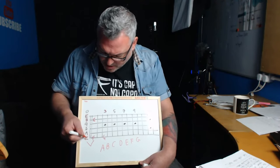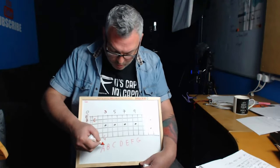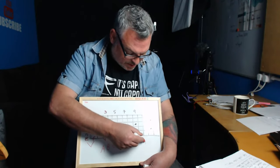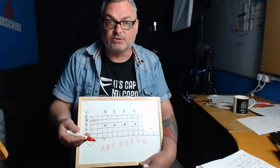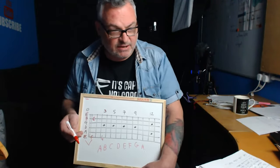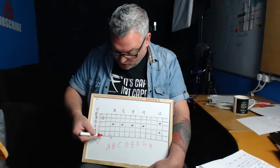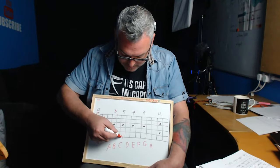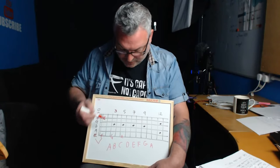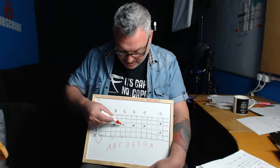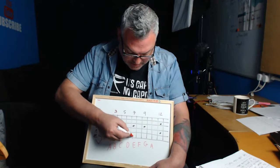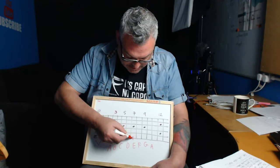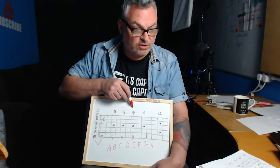When we reach the end of the musical alphabet at G, we go back to A, and the sequence starts again. That A lands on the fifth fret where the second dot is on your fretboard. The next note after A is B, and that B lands beautifully on the seventh fret — another dot.